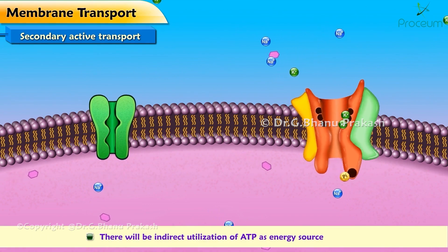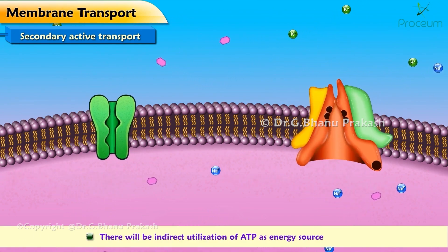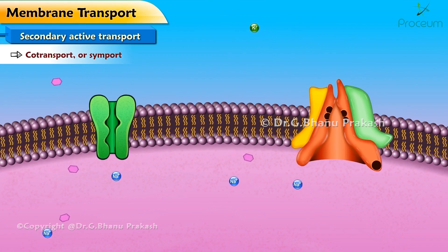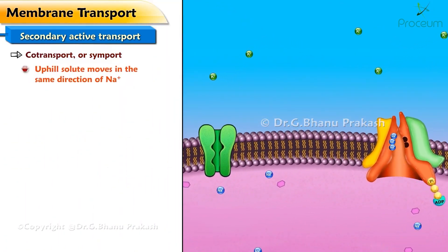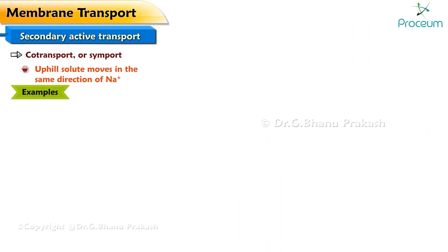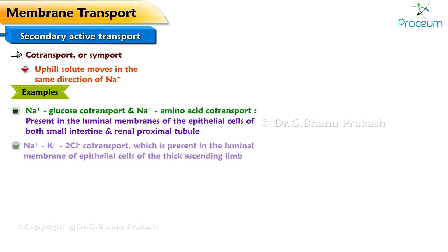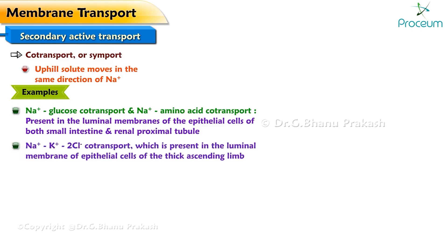Based on the directions of movement of the uphill solute, secondary transport is divided into two types: co-transport or symport, and countertransport or antiport. Co-transport or symport is when the uphill solute moves in the same direction as Na+. For example, Na+/glucose co-transport in the epithelial cells of the brush border of the small intestine, Na+/amino acid co-transport present in the luminal membranes of both the small intestine and the renal proximal tubule, and Na+/K+/2Cl- co-transport present in the luminal membrane epithelial cells of the thick ascending limb.